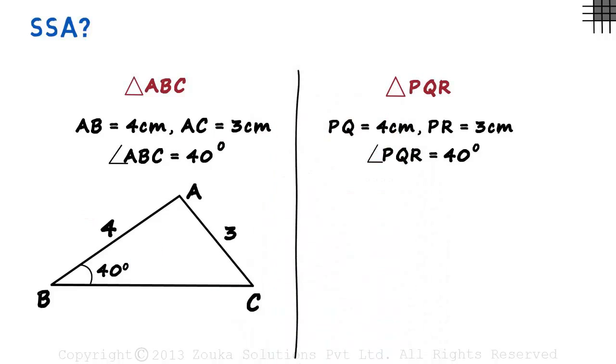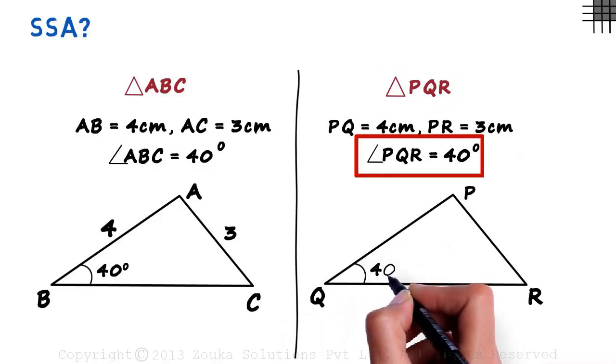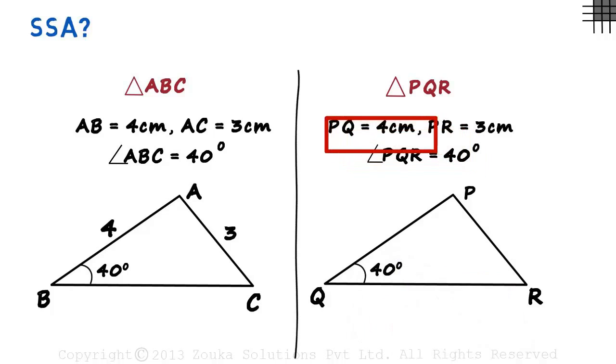Now let's look at the data of triangle PQR. It can be drawn like this. Angle PQR is 40 degrees, PQ is 4, and PR is 3.